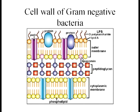The cell wall of the gram-negative bacteria is a little bit more complex. There is an outer membrane, and then the layer of peptidoglycan is much thinner — represented by only two sets of the red square purple circle complexes. It also has a cytoplasmic membrane in common with the gram-positive bacteria. These differences in the cell wall are the reason that gram-positive and gram-negative bacteria stain differentially.